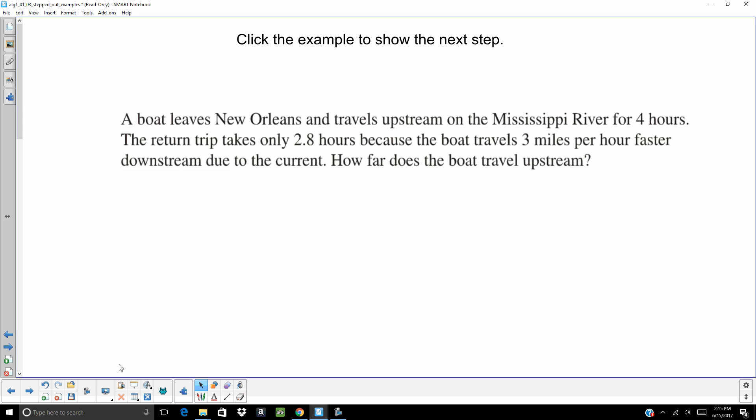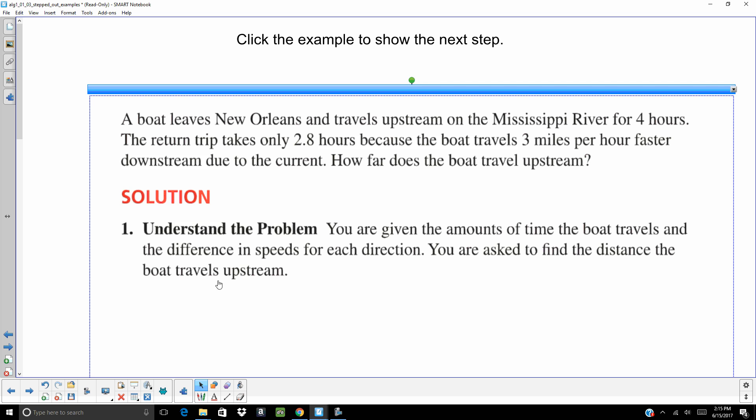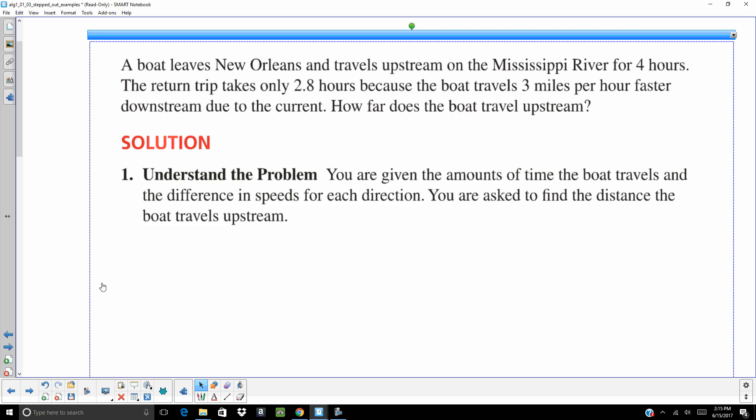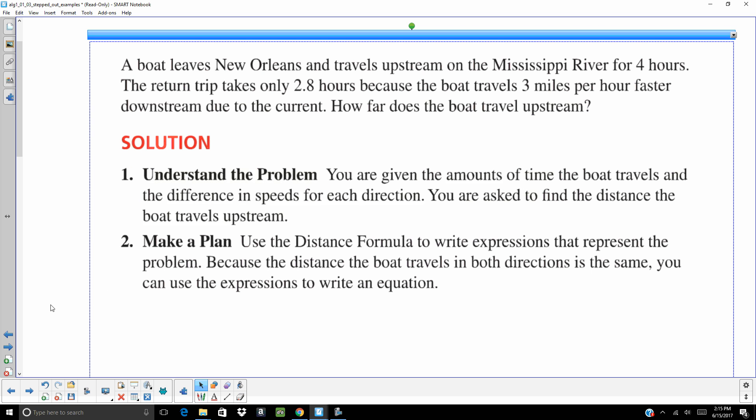All right. Let's do a word problem. A boat leaves New Orleans and travels on the Mississippi River for 4 hours. The return trip takes only 2.8 hours because the boat travels 3 miles per hour faster downstream due to the current. How far does the boat travel upstream? So, first thing we always want to do, understand that problem. You're given the amount of time the boat travels, different speeds, and you're asked to find that distance.